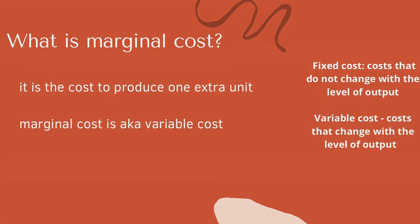Marginal cost can also be called variable cost. Variable costs are costs that change with the level of output — if output is increasing, costs also increase. Fixed costs, on the other hand, do not change with the level of output. A good example of a fixed cost is rent: even if operations are not being held, you still have to pay rent. Total cost is divided into two types: fixed cost and variable cost.